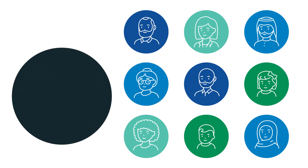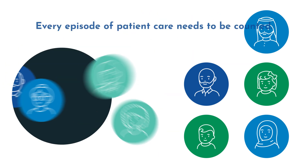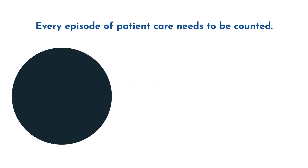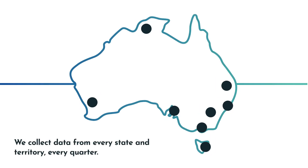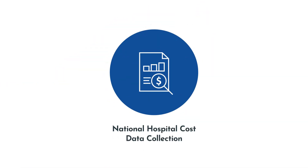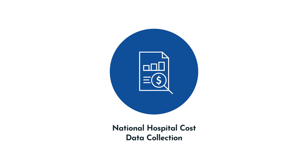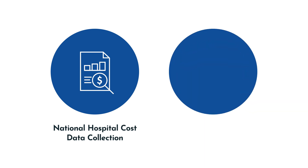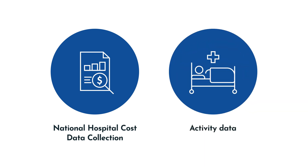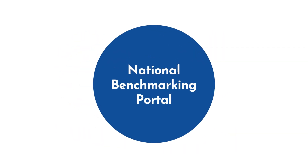In order for activity-based funding to be effective, every episode of patient care needs to be counted. We do this by collecting hospital cost and activity data in consultation with states and territories across Australia every quarter. Cost data refers to the cost accrued during the delivery of an episode of patient care, categorised according to the different resources used. Activity data refers to the type and volume of the episodes of care. The National Benchmarking Portal presents insights from the combination of these cost and activity data sets.